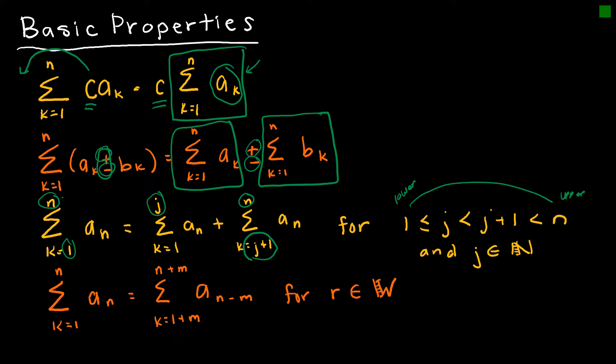Do not underestimate the importance of this last property. It says if you have a summation from one to n but want to find the summation for n minus some number m, all you have to do is manipulate the lower and upper bounds. If you add m to the lower bound, you also add m to the upper bound, but on the series you adjust the values being added accordingly — taking n minus m to find the correct first value.